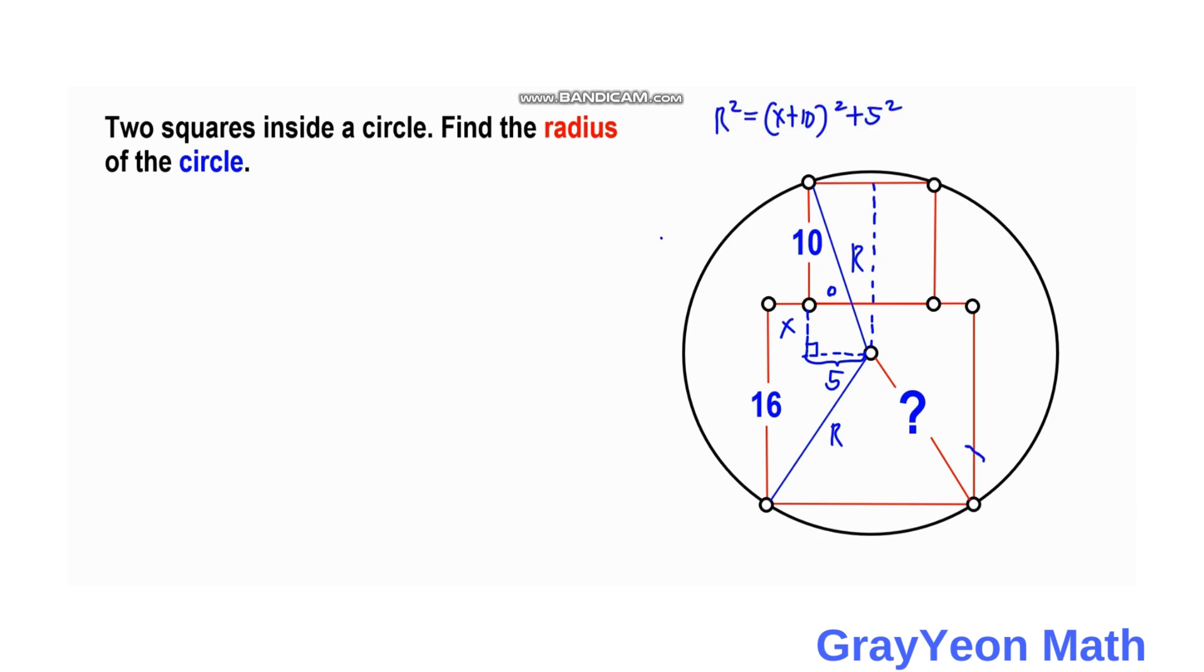Next, we continue this 5-unit segment. This whole segment will be half of 16, which is 8. Since this segment is x, then this will be 16 minus x. We see this right triangle—the hypotenuse is still r, one side is 8, and the other leg is 16 minus x.